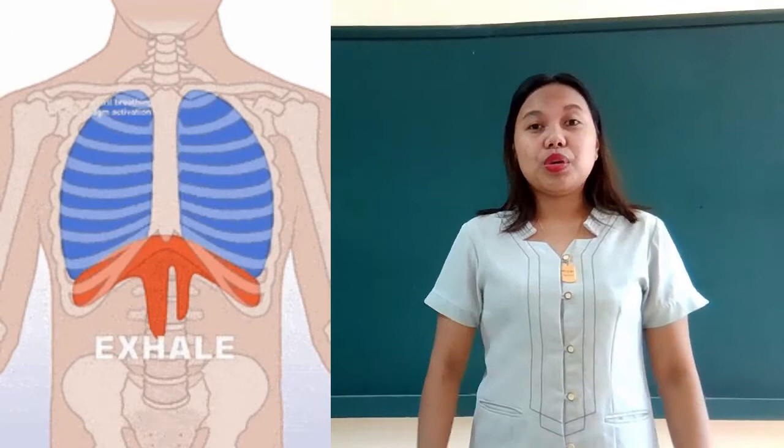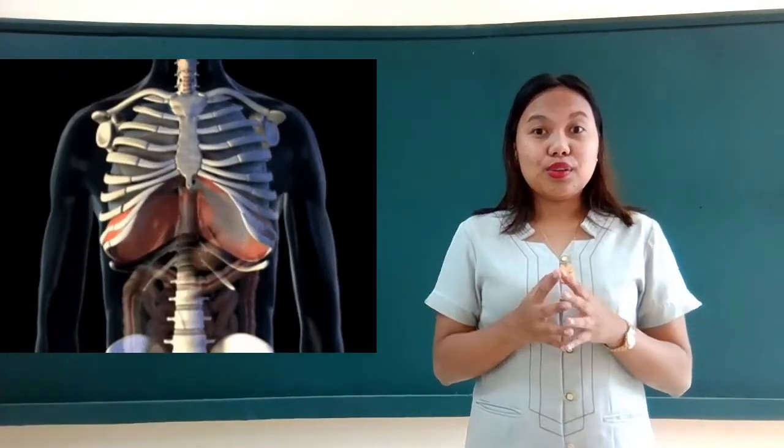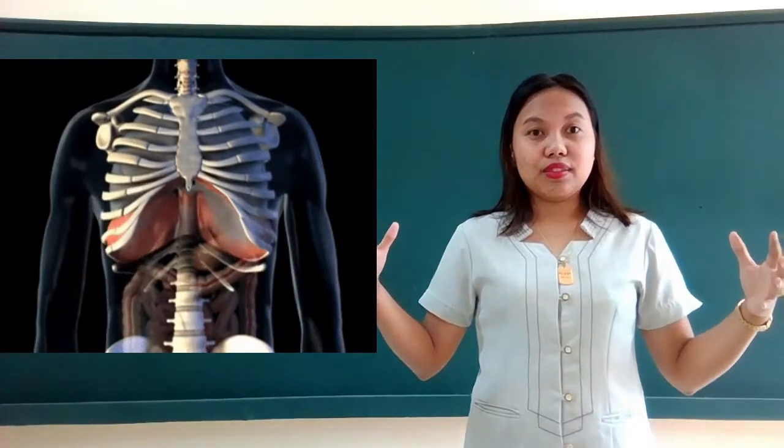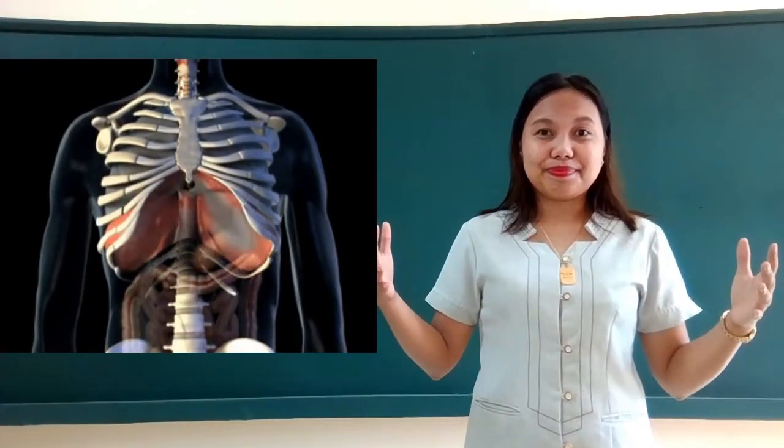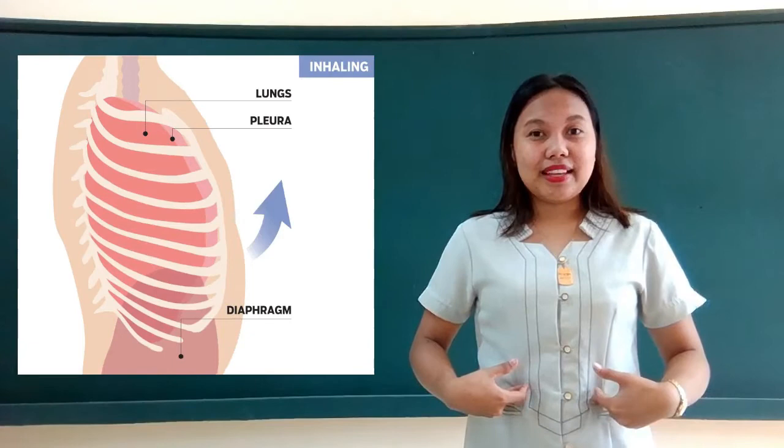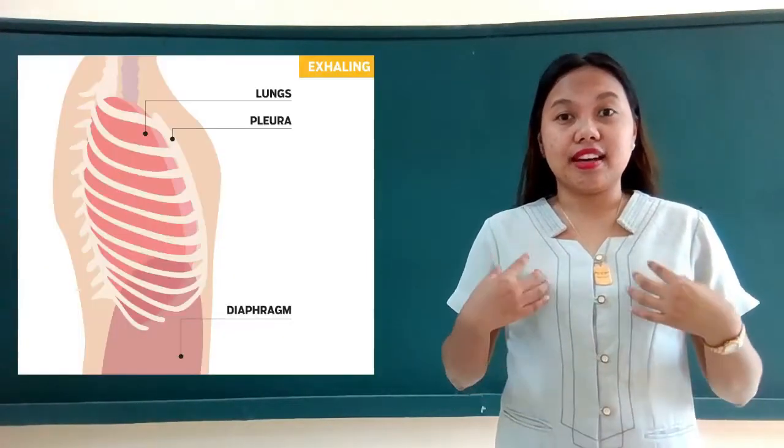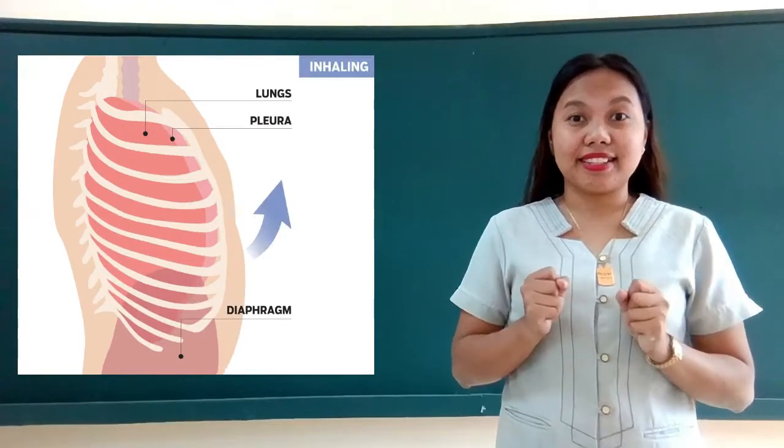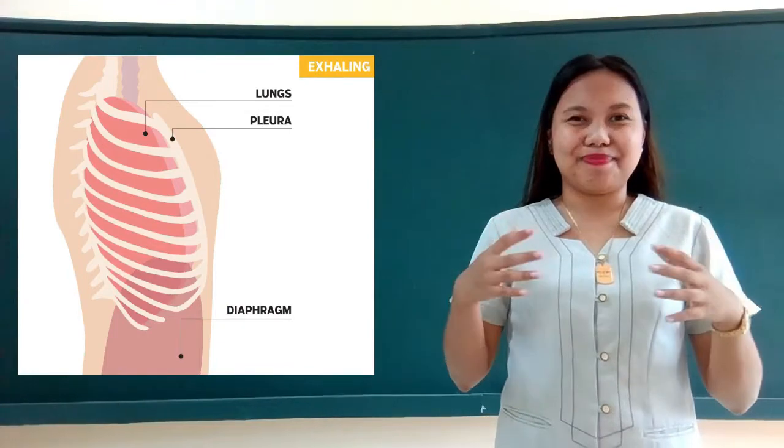So remember, when we breathe in air, our ribs goes upward, or somehow it expands, same with our lungs and same with our diaphragm. If we exhale, then our lungs will contract, same with our diaphragm, and our ribs will also do the same.